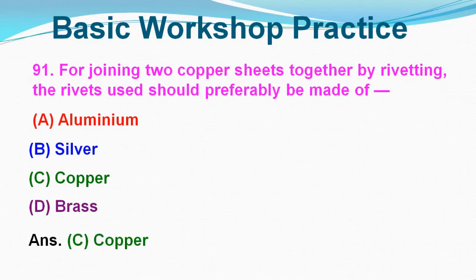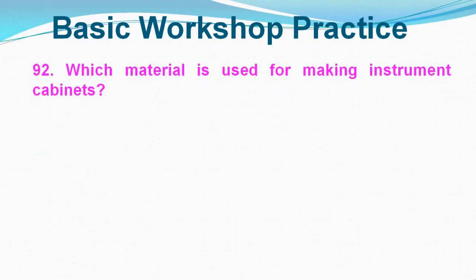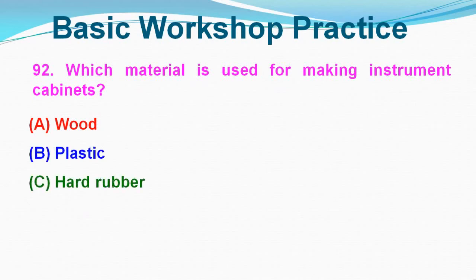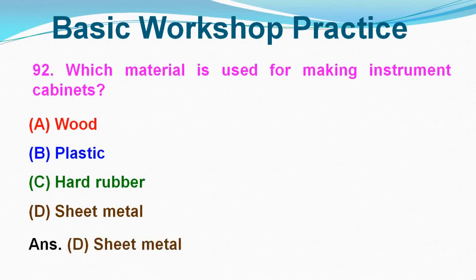Question No. 92: Which material is used for making instrument cabinets? Option A: Wood, Option B: Plastic, Option C: Hard rubber, Option D: Sheet metal. Correct answer is Option D, Sheet metal.